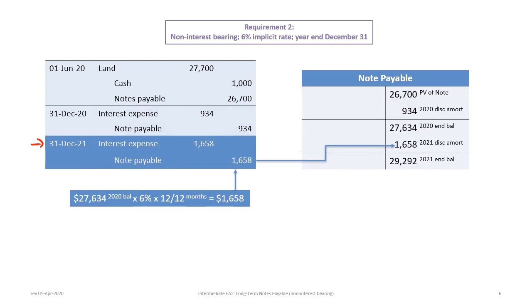Fast forwarding to December 31st, 2021, we record a debit to interest expense and a credit to note payable, but with a new value. The interest expense is not the same as $934 — it differs due to compounding. Our $27,634 ending balance from the prior period becomes the starting point for the new interest calculation, times 6%, this time for a full year. The interest expense and discount amortized is $1,658. Adding this to the account, the note payable balance at end of 2021 is $29,292.